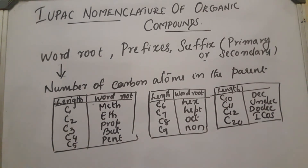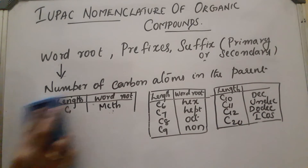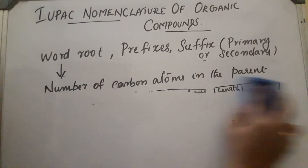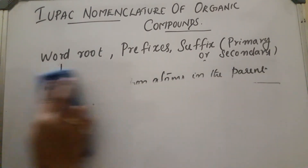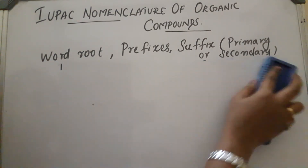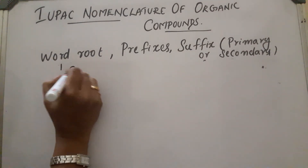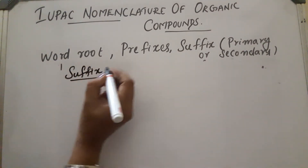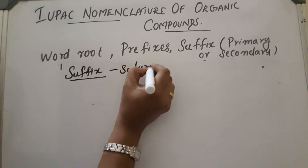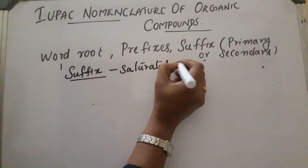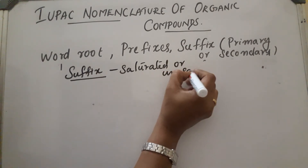Depending upon the length, the word root varies. Now the next part is suffix. Suffix indicates the carbon chain and whether the compound is saturated or unsaturated.